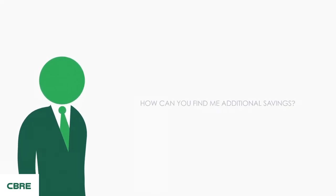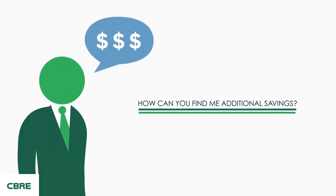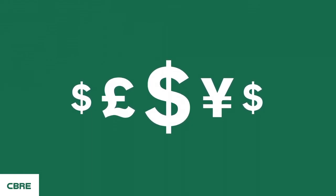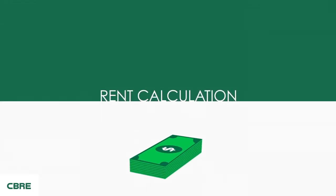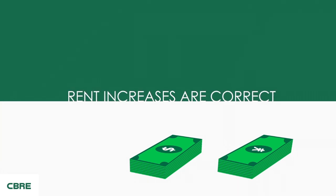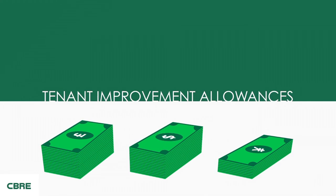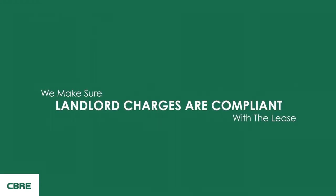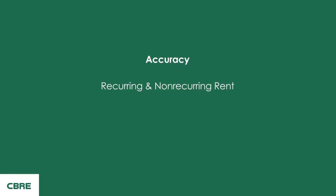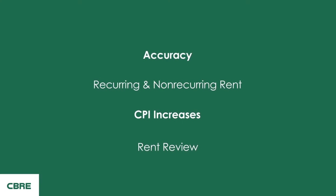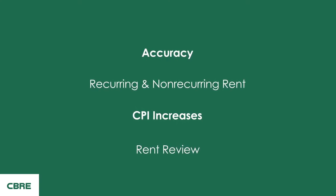Cost reduction is a high priority. We can help you find savings in your leases in many different ways — whether through rent calculation, making sure your rent increases are correct, that landlords' pass-through billing and other invoices are lease compliant, and that you get your tenant improvement allowances. We make sure landlord charges are compliant with the lease: accuracy on recurring and non-recurring rent, CPI increases, rent review, and that indexations are calculated correctly and charged to tenants.